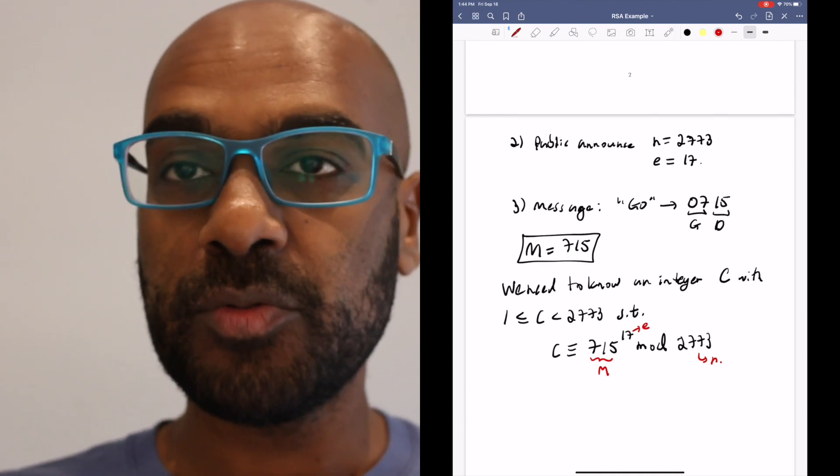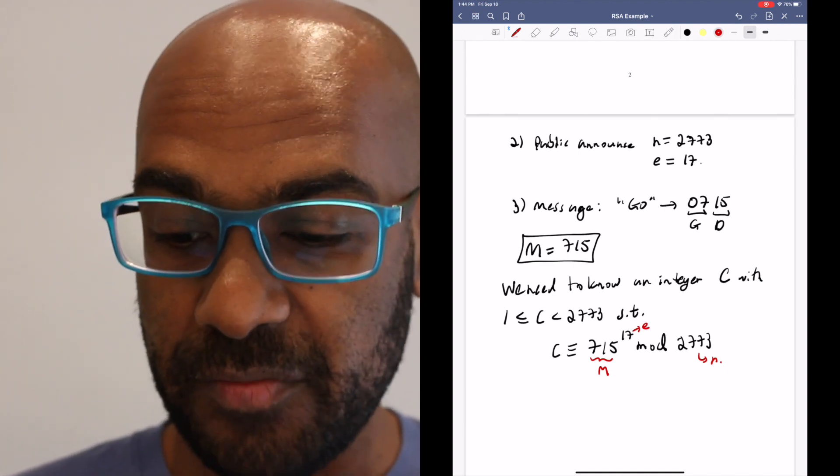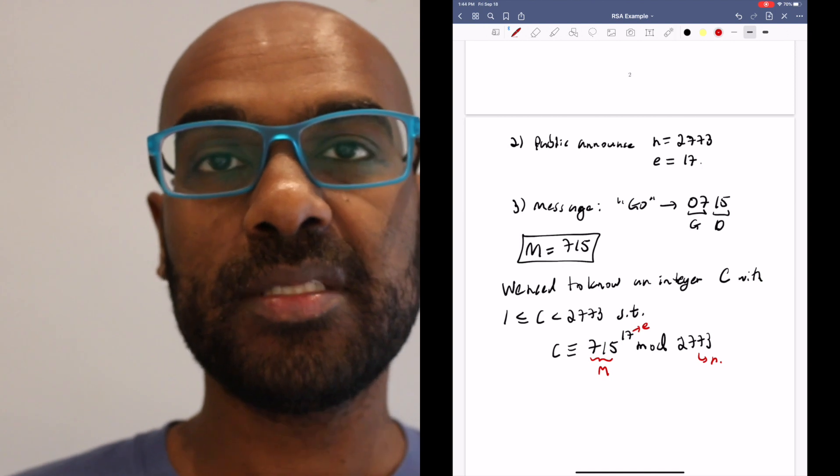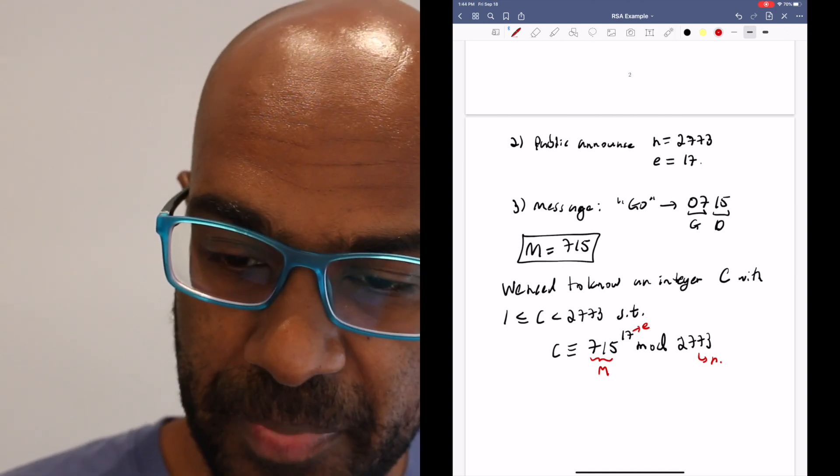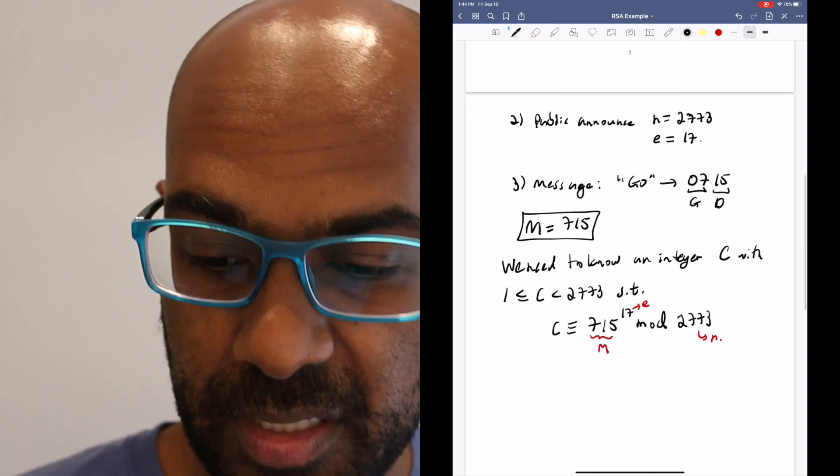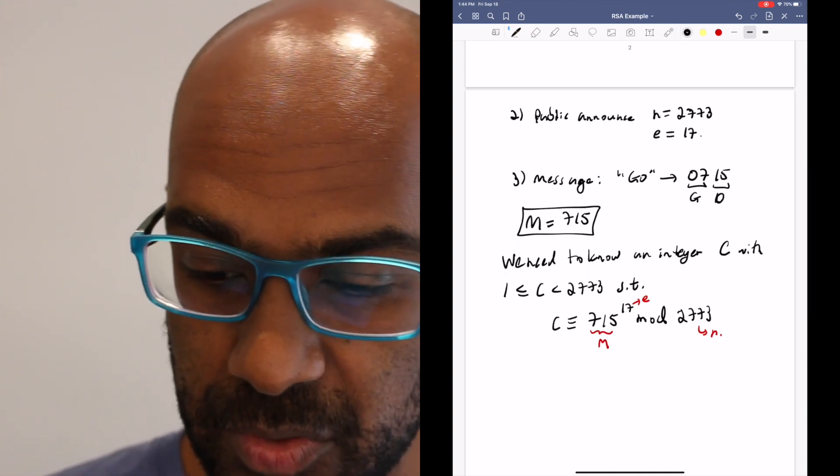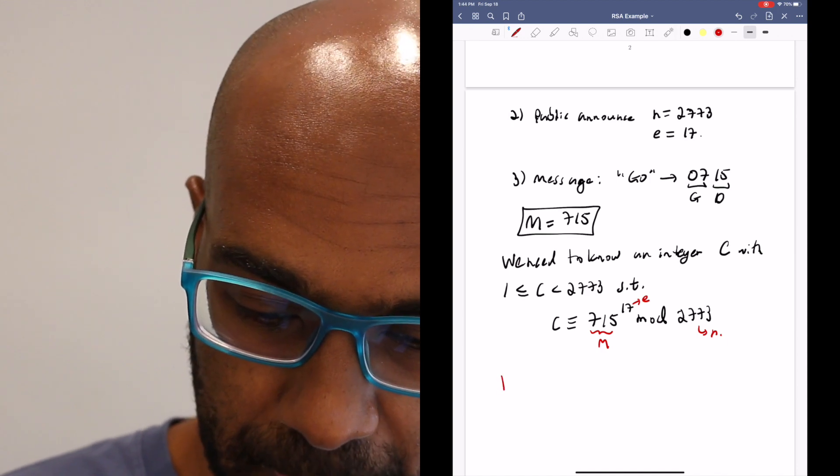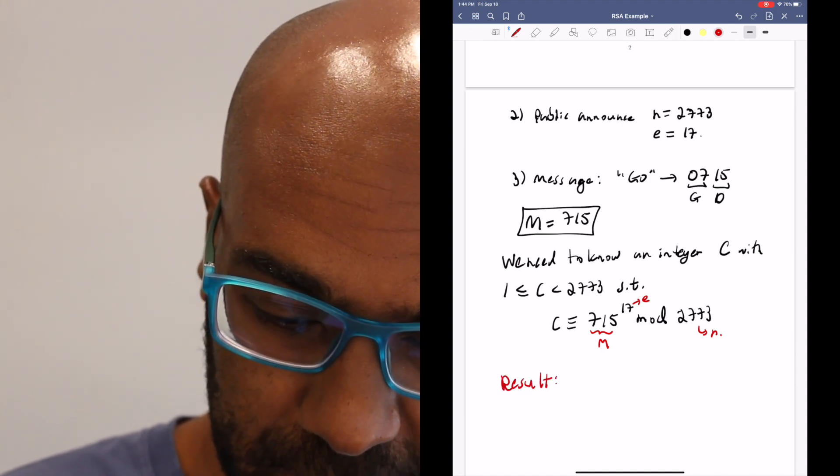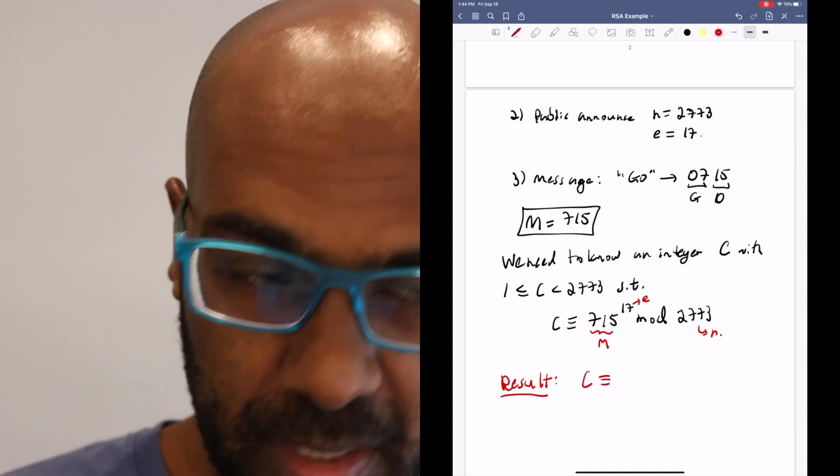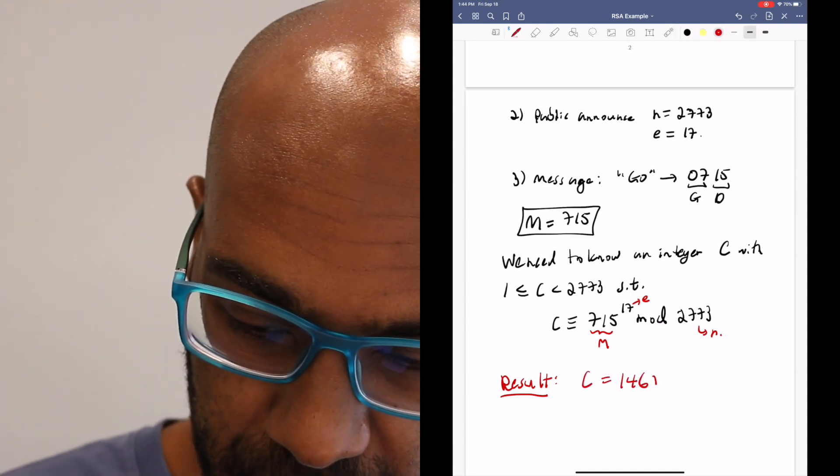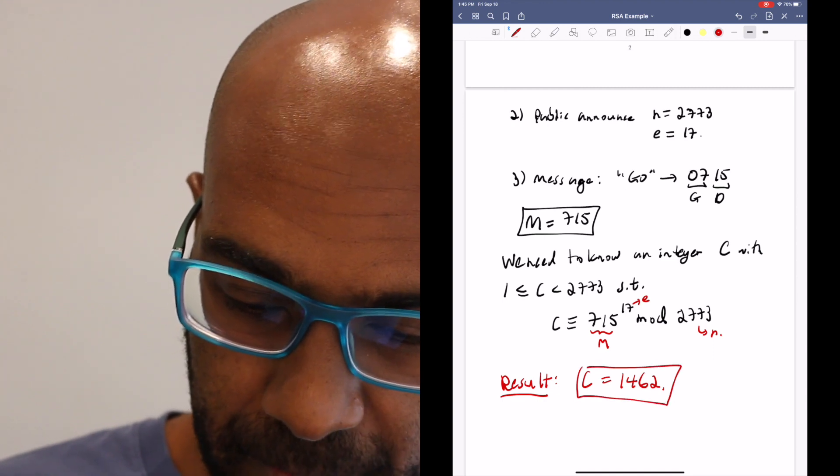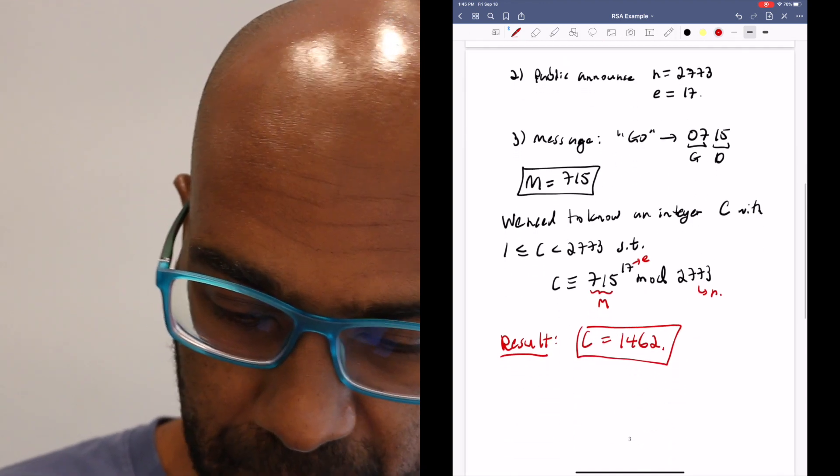This takes some work. There are a lot of different things that we can do. We can start raising 715 to small powers like 2, then take that result and square it to get 715 to the 4, etc. And lots of other techniques. If the number E was quite large, we have other techniques that we can use as well that we've learned in previous videos. If you do this process, I'll mention what the result is. The result is that C is going to equal 1462.